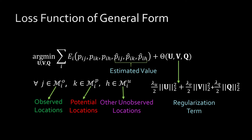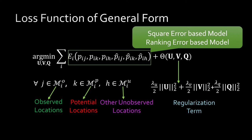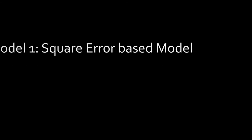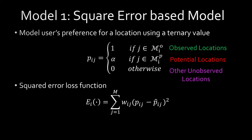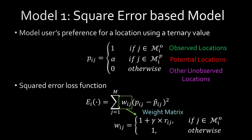The loss function can be formulated like this. To model a user's preference for a location is a ternary value. We obtain the loss function by minimizing the sum of square errors. A weight metric is introduced to indicate the confidence that a user likes a location.